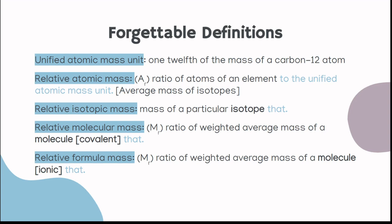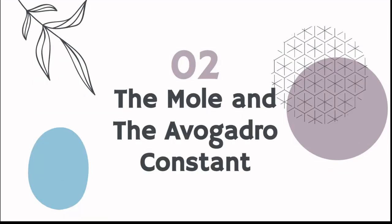Then we have relative formula mass, which is the ratio of weighted average mass of a molecule that is ionic. These have the same definition, but they're called different things. So ACE might ask you the difference between molecular and formula, or they might ask you similarities and differences. The only difference is covalent versus ionic, but the math is the same. Honestly, there's no easy way to memorize these. I just put them on flashcards and put them on loop. That was all they wanted for the first section.